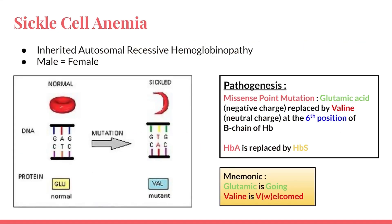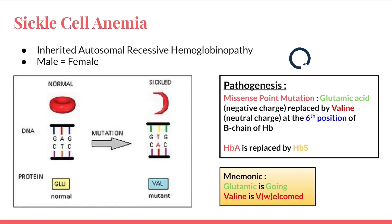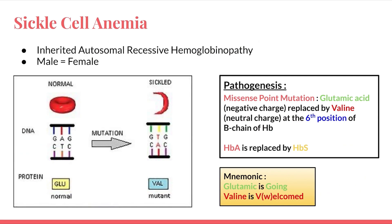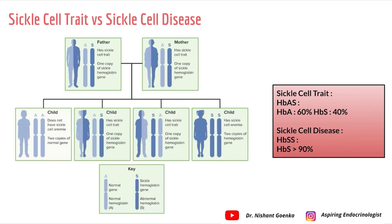Sickle cell anemia is an inherited autosomal recessive hemoglobinopathy — there is a problem in the hemoglobin structure. Its incidence is equal in male and female. The pathogenesis is a missense point mutation where glutamic acid is replaced by valine at the sixth position of the beta chain of hemoglobin, so normal HbA is replaced by HbS. A good mnemonic: glutamic acid is going and valine is welcome — glutamic acid leaves the chain and valine comes in, changing the whole structure to form the mutant hemoglobin.